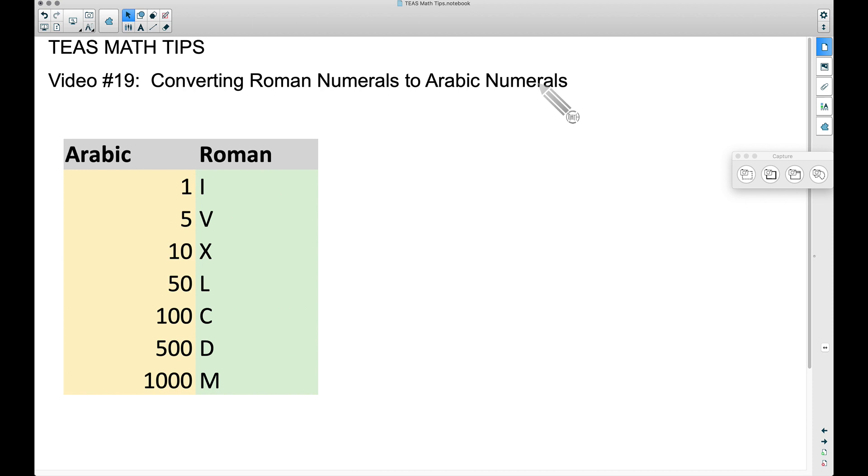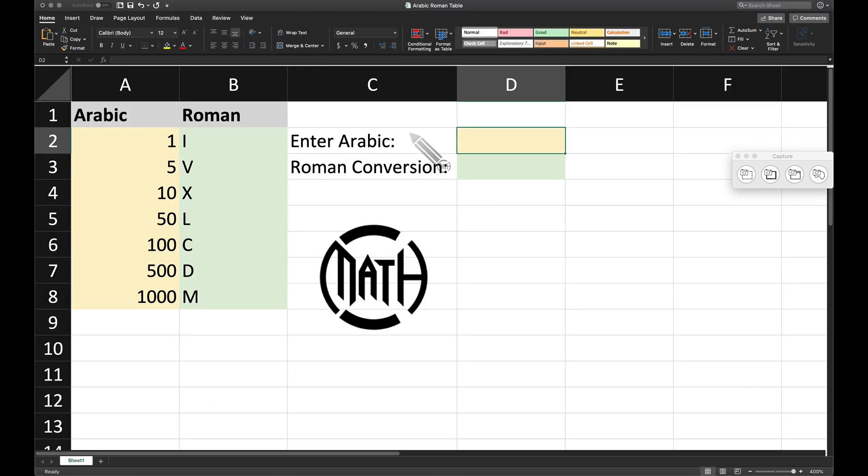In these two columns here we have the Arabic numerals - that's zero, one, two, three, four, five, six, seven, eight, nine, numbers we use all the time - and then we have the Roman numeral equivalents. Think of one as a single tally mark, five is a V, ten is an X, fifty is an L, one hundred is a C, five hundred is a D, and one thousand is an M.